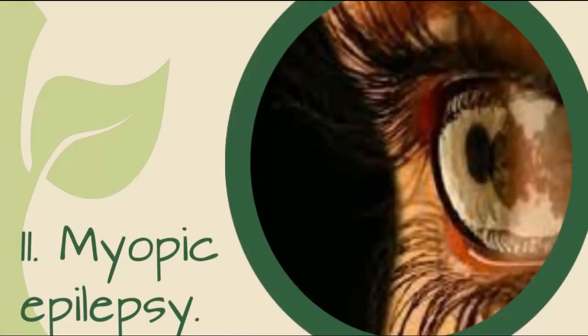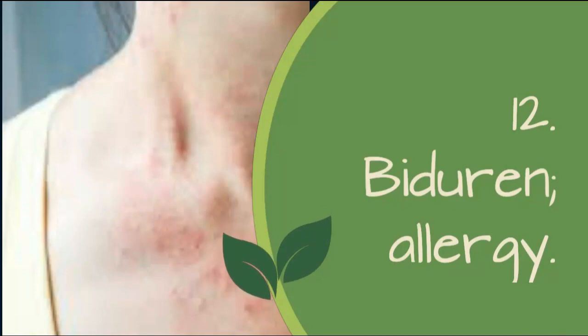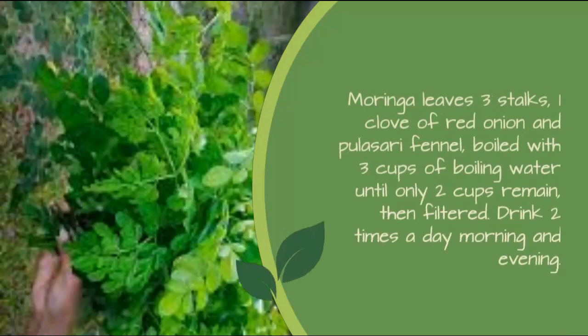11. Myopic Epilepsy: 3 stalks of Moringa leaves finely ground, brewed with 1 cup of boiled and filtered water. Mix with honey and stir until evenly distributed. Drink before bed. 12. Urticaria/Allergy: Moringa leaves 3 stalks, 1 clove of red onion and polisari fennel, boiled with 3 cups of boiling water until only 2 cups remain, then filtered. Drink 2 times a day, morning and evening.